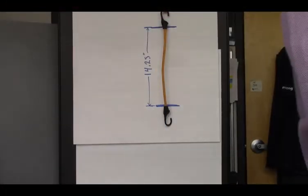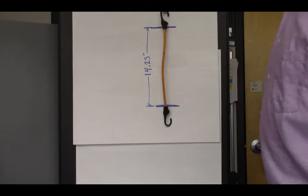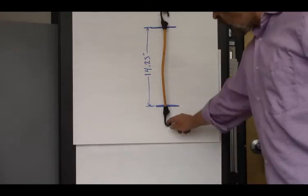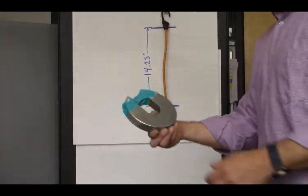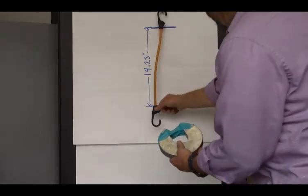So we have a bungee cord that's originally 14.25 inches long unstretched. We're going to take a five pound weight and we're going to see how much it stretches.